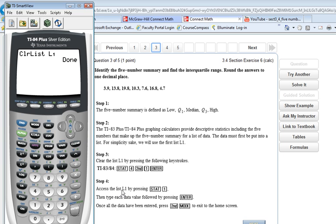Now to access list number 1, we're going to press stat and choose number 1. At this point, once all the data has been entered, press second mode to exit the screen. So we're going to enter the data.